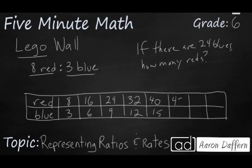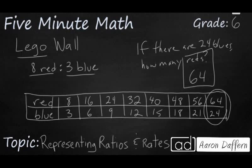48 to 18. 56 to 21. And now we finally get to our 24 blues. And that is going to be with a total of 64 reds. So if we're keeping this ratio of 8 reds to 3 blues, we can use this table to find our ratio of 64 to 24.